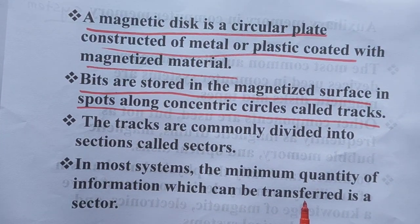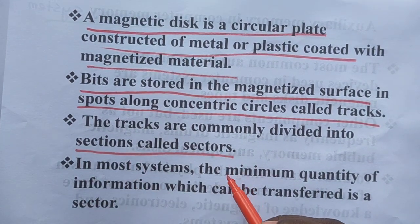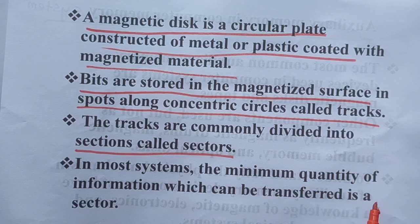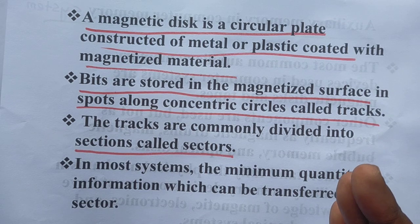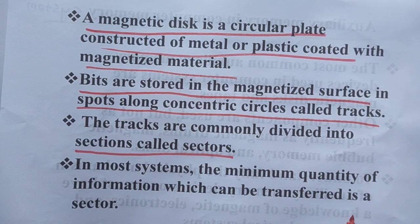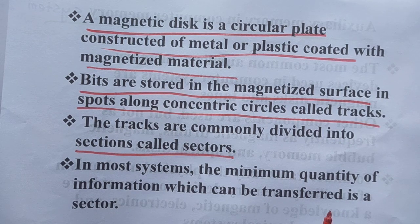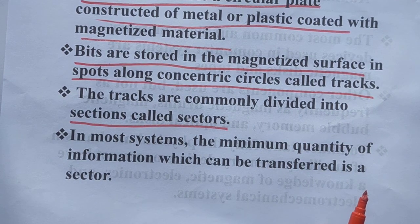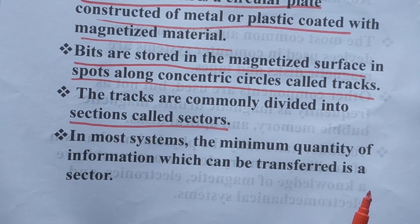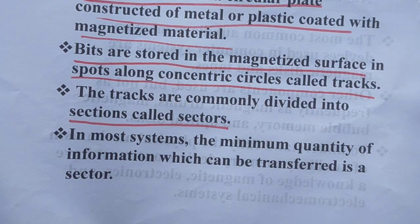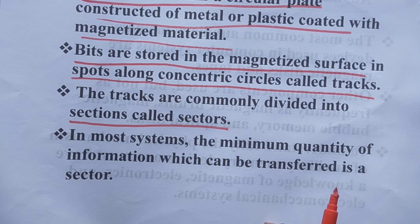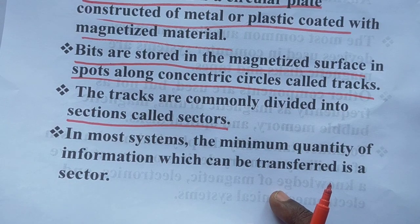The tracks are divided into a number of sections called sectors. In most systems, the minimum quantity of information which can be transferred is a sector. Whenever we store or retrieve data from the magnetic disk, the data is transferred through that sector — each sector stores some data and also retrieves data.